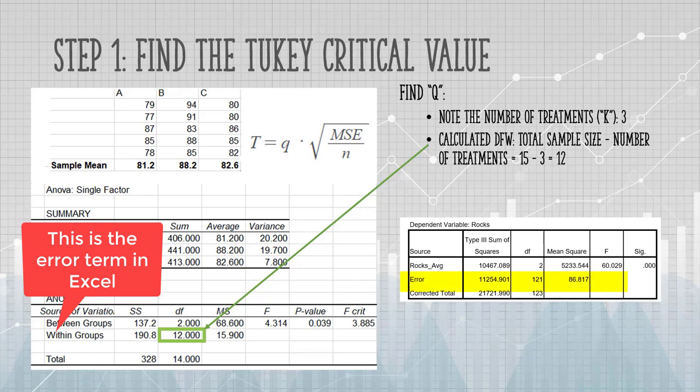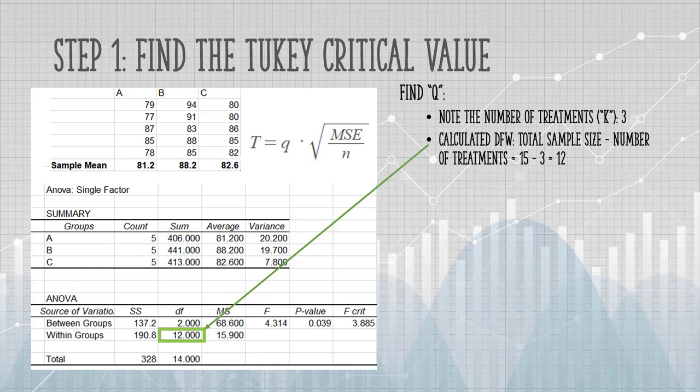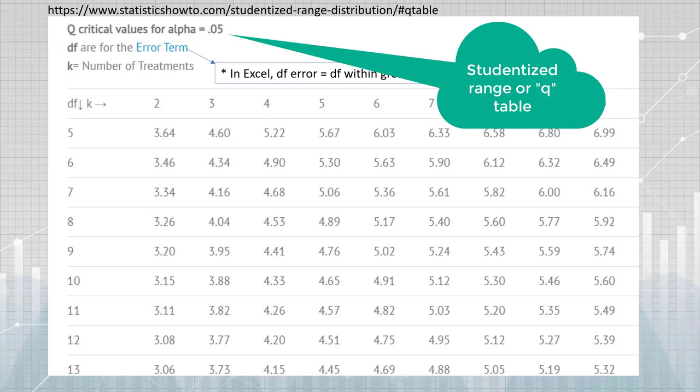You could get the degrees of freedom another way by counting up all the items in your sample, that's 15, and subtracting the number of groups, that's 3. So if we take a look at our table, we have K equals 3 with 12 degrees of freedom.